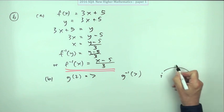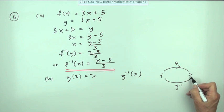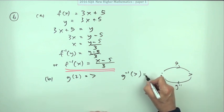If you start with 2, g takes you to 7, so the inverse function is the one that takes you back again. So the inverse function acting on 7 should be 2.